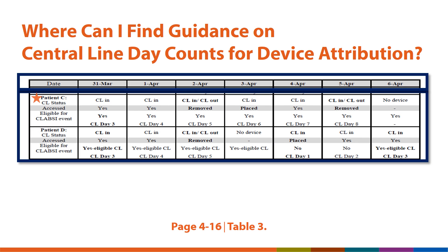Let's look at Patient C. This patient had three central line days for device attribution counted by March 31, so the central line became eligible for a CLABSI event on March 31, which is central line day count 3 for device attribution. Notice on April 2, or central line day count 5 for device attribution, the central line is removed but replaced the following day. Because a full calendar day did not pass without a central line in place, the central line day count for device attribution continues uninterrupted.